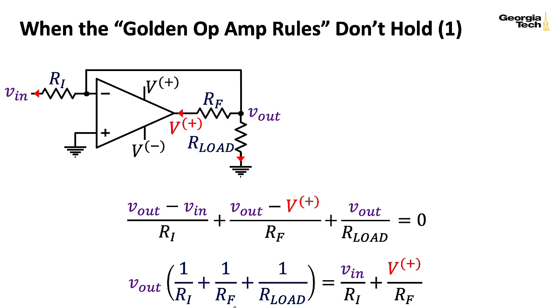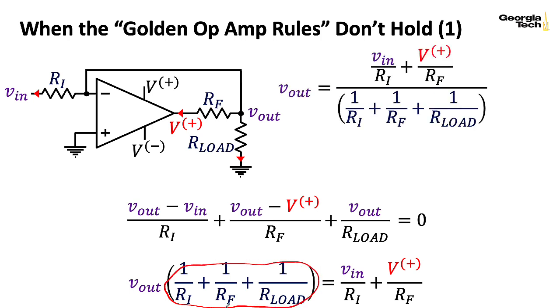And then we can factor out Vout on the left-hand side. We can now divide both sides of the equation by this giant term here to get an expression for Vout in terms of Vn. This isn't a horribly complicated expression. It is somewhat complicated.